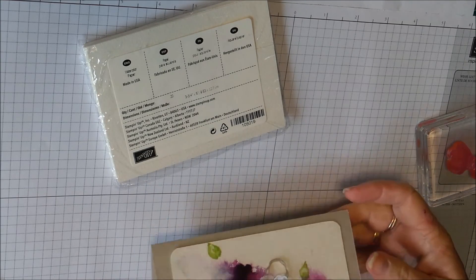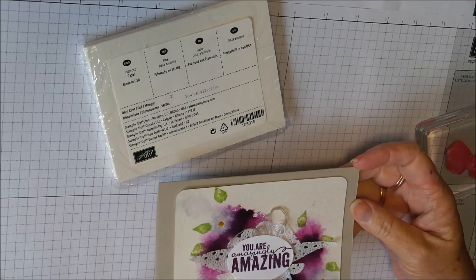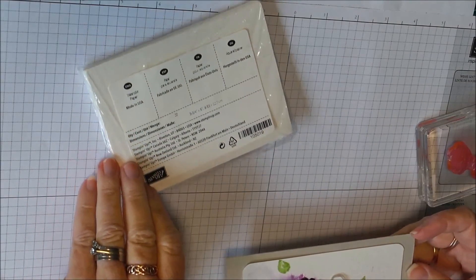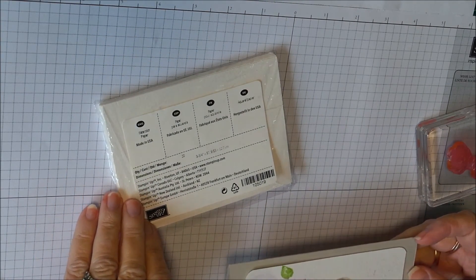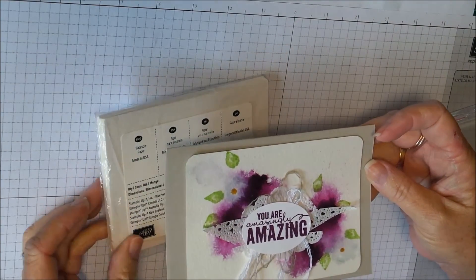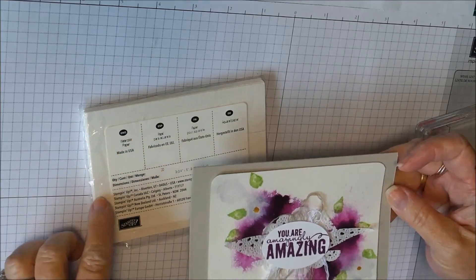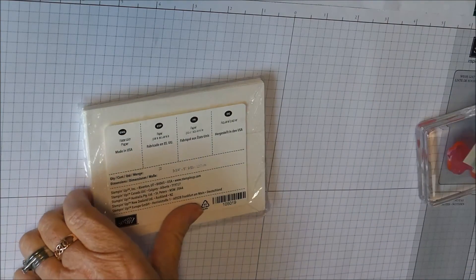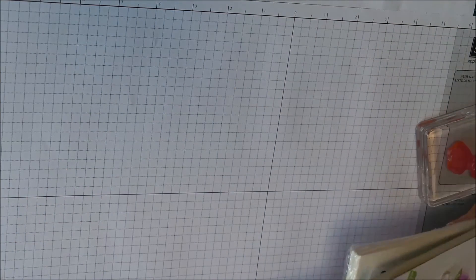Now to make this card you need some of our watercolor paper and it's just the right size for the front of the card and I've just rounded the corners of the paper with our corner rounder.